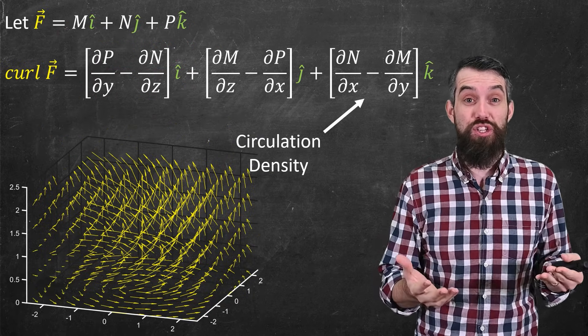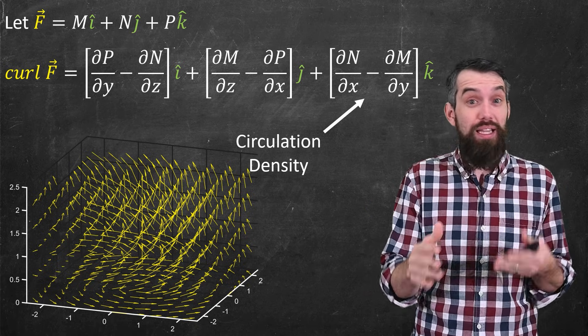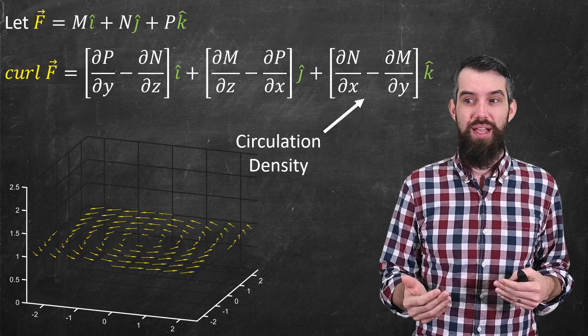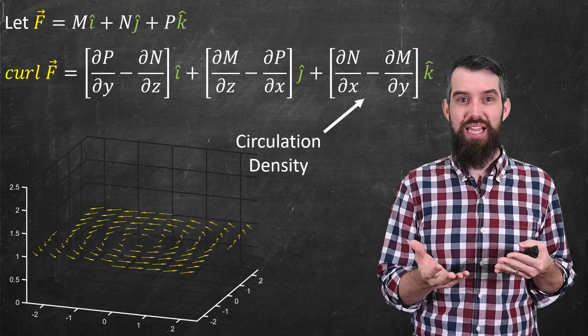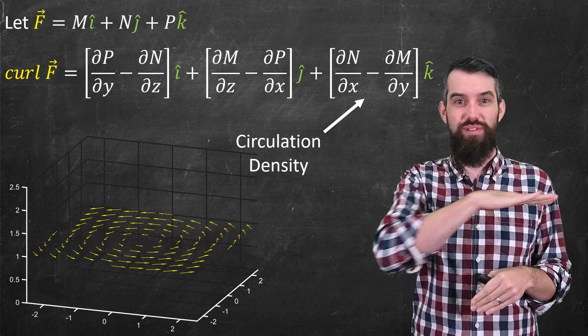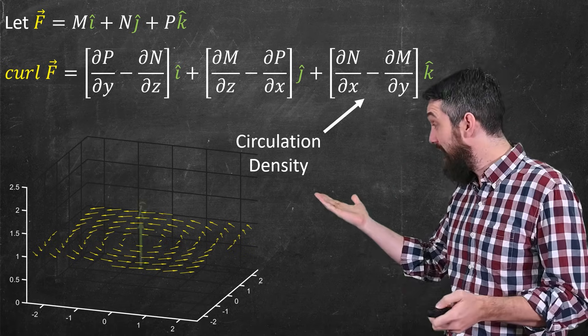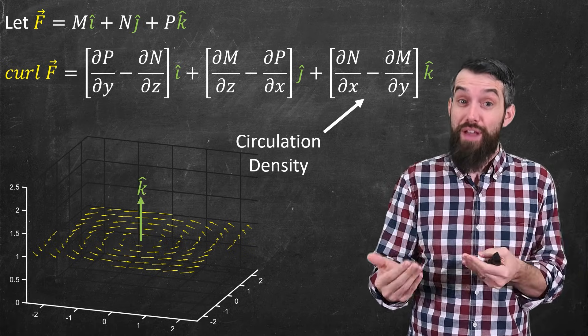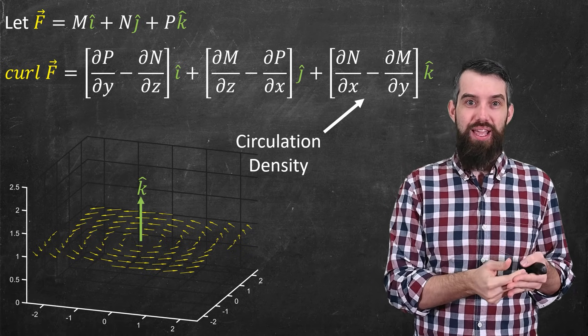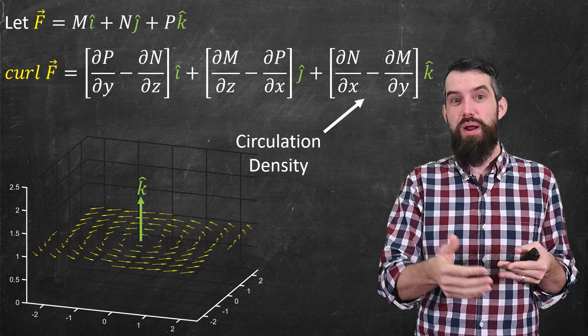So returning back to our definition with the three different components, one other way to interpret the third component is, let me just imagine, I'm just going to do a slice, a slice parallel to the xy plane. So I've got all my vectors looking on the slice, and I've ignored what their third component is, what their k-hat component is, I've just sort of leveled them all off. Indeed, if I take a slice parallel to the xy plane, then I would get some normal vector to that xy plane, which I can call the k-hat vector. So what I have at this point is that the vector field is causing this curling in this plane that's parallel to the xy plane.